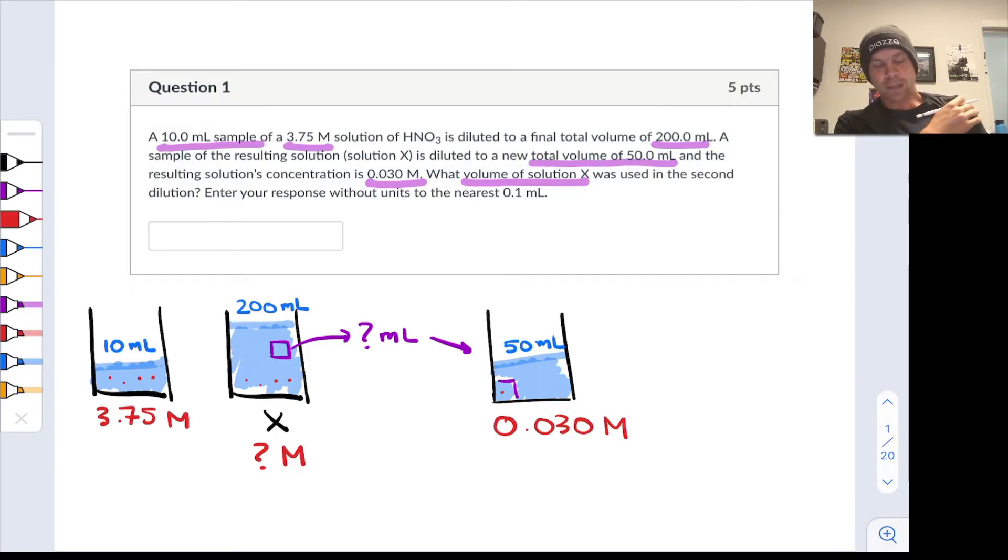Well I would start with the first dilution figuring out what the molarity of solution X is. To do that we can take advantage of the dilution equation, right? I took 10 milliliters of the stock solution and diluted it to a total volume of 200 milliliters.